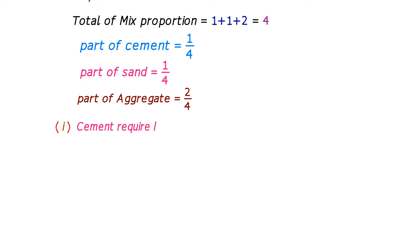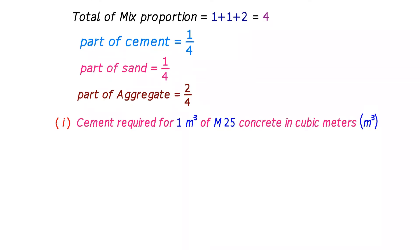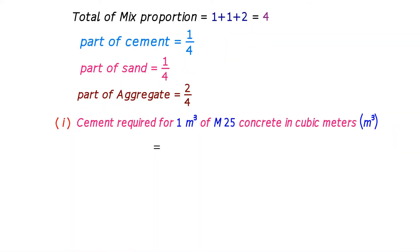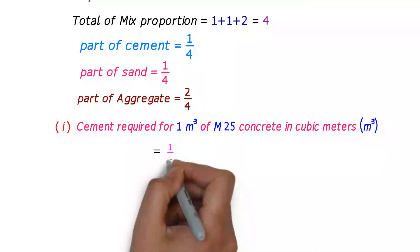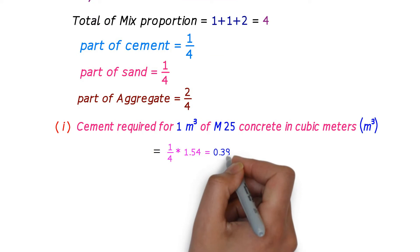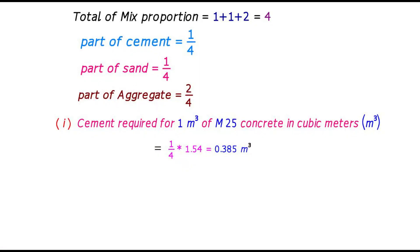We will calculate the cement required for 1 meter cube of M25 concrete in cubic meters. The cement quantity is equal to 1/4 × 1.54, which is one-fourth part of the total dry volume of concrete. We get the cement volume as 0.385 meter cube.